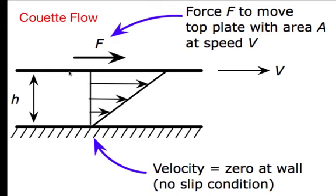This type of flow is named in honor of Maurice Couette, who was a professor of physics in the late 1800s. The velocity profile is linear.